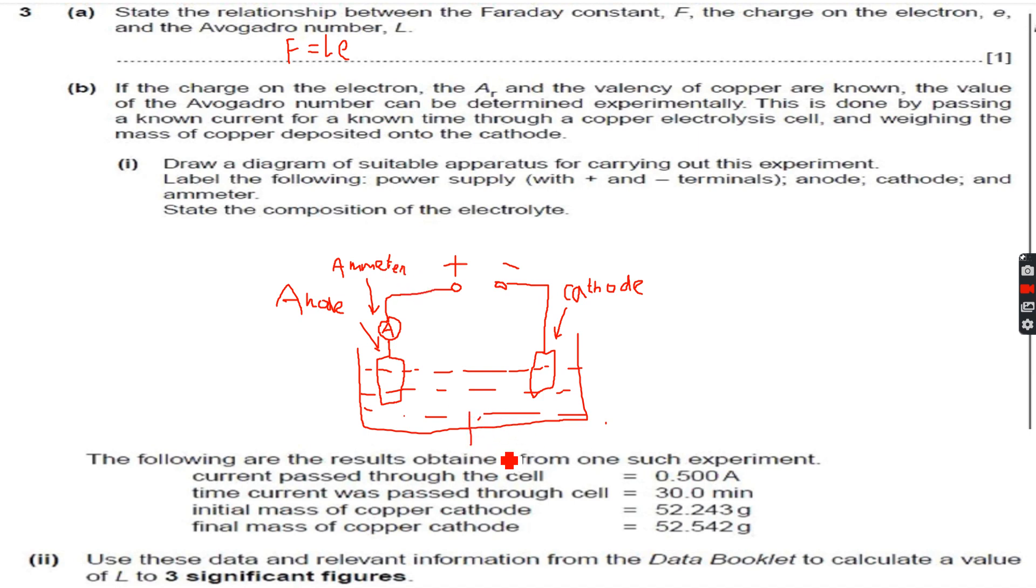And this is the electrolyte, which we have to state the composition of. This will be CuSO4. Now why I have used copper sulfate solution aqueous? Because the anode is copper...